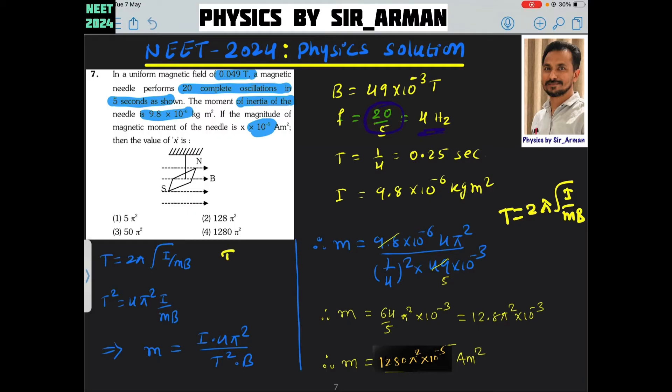Here i is the moment of inertia, and how much is it given? 9.8 into 10 raised to minus 6. Again, magnetic field is also given, how much? It is 49 into 10 raised to minus 3 Tesla. And time period t, now when we know frequency, which is 20 oscillations by 5 seconds, so it is 4 hertz. The time period will be 1 by 4 seconds, and that is 0.25 seconds.